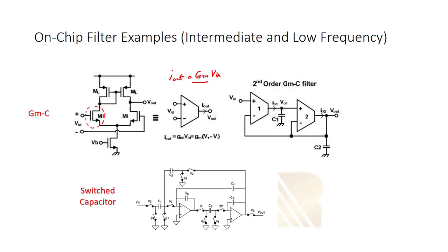When going to the RF part or RF front-end, we must use LC filters. Switch capacitor filters, as shown here as a second-order design, require different kinds of switches and are much more complicated than GMC filters, but they offer low power and their own advantages. We are not going to discuss switch capacitor filters in detail as it is somewhat off-topic.